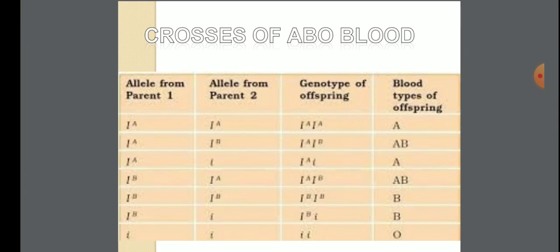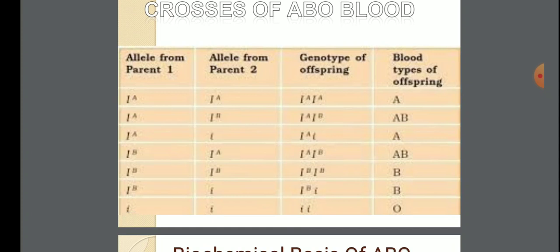Crosses of ABO blood groups: check the chart. Allele form of parent 1 and allele form of parent 2 determine the genotype and blood type of offspring. If parent 1 allele is A and parent 2 allele is also A, the genotype of offspring is AA and blood group type is A. If parent 1 allele is B and parent 2 allele is A, the genotype is AB and blood group type is AB. If both alleles are small i, no A or B antigens are present and the blood group type is O.